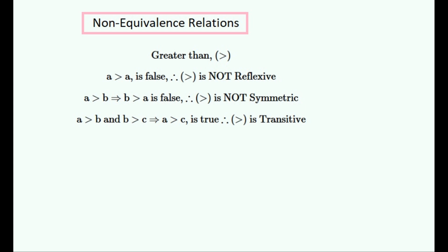Notice why it is transitive: the lower bound for C is pushed downwards and it is forced to be true by the nature of this relation. It must be noted that the less than relation will give a similar result, being non-reflexive, non-symmetric, and transitive like the greater than relation.